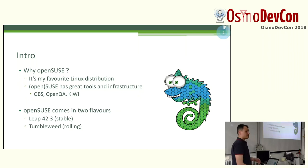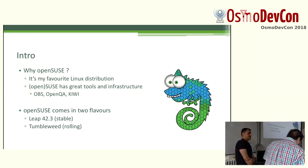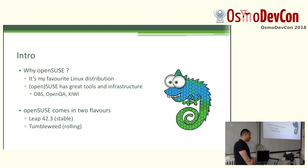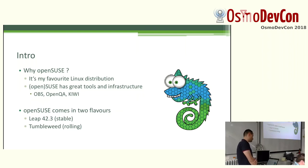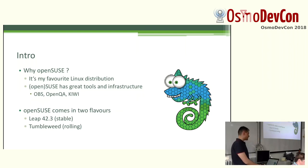Why OpenSUSE? Everybody has their own favorite distribution, and mine is OpenSUSE. OpenSUSE has some great tools and great infrastructure in place, like the OBS — which I will talk about later — OpenQA, and Kiwi. It actually comes in two flavors: there's LEAP, which is the current stable and regular release, and there's Tumbleweed, which is a rolling release model.